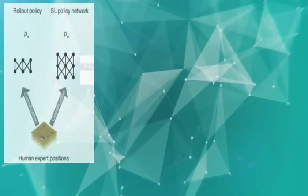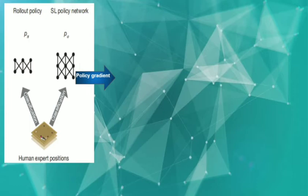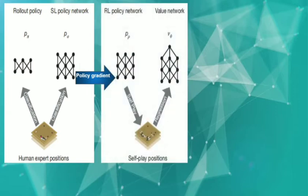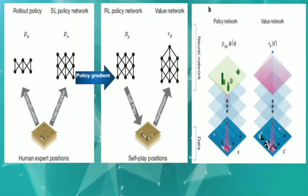Here's the overall architecture of AlphaGo's learning. There are 2 networks: Policy Network and Value Network, and the whole architecture resembles the homework structure of our school. Firstly, we train Rollout Policy and SL Policy Network on Human Expert Games, feed the result to an RL Policy Network with the help of Policy Gradient, which after several self-play games improves the algorithm, and finally we get the Value Network that helps find out the value of the selected move or board position.